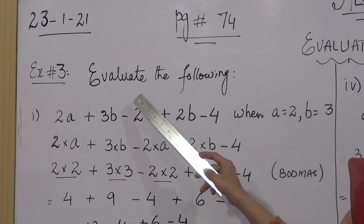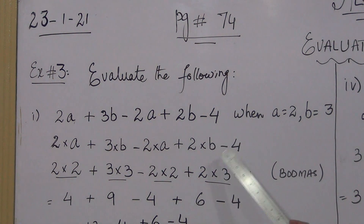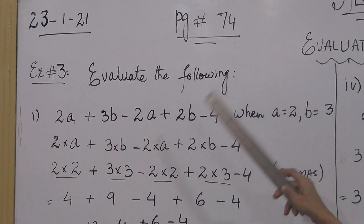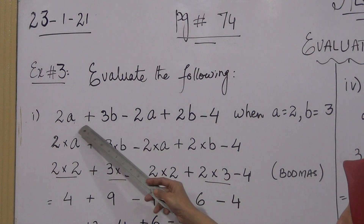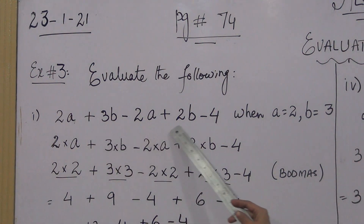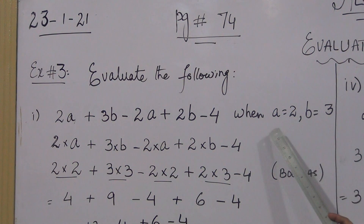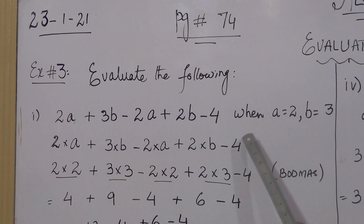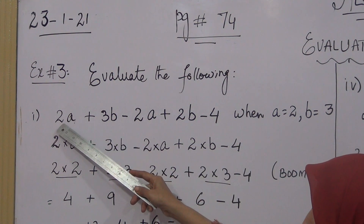The difference is that the values are given with the expression — the value of the variable is given with the expression. First we have to expand the expression, second we have to replace the value in place of the variable, and third calculate the values. First we have to expand where the operator is not shown.